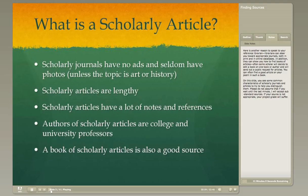Here's another reason to speak to your reference librarian. Librarians can steer you toward appropriate journals, both in print and in online databases. In addition, they can show you how to find books of articles. A book of articles is when a scholar decides to edit a book on one topic or one author's work of literature and sends out a public request for articles from other scholars. You can often find a good article on your poem in such a book, and librarians can show you how to find those kinds of books.